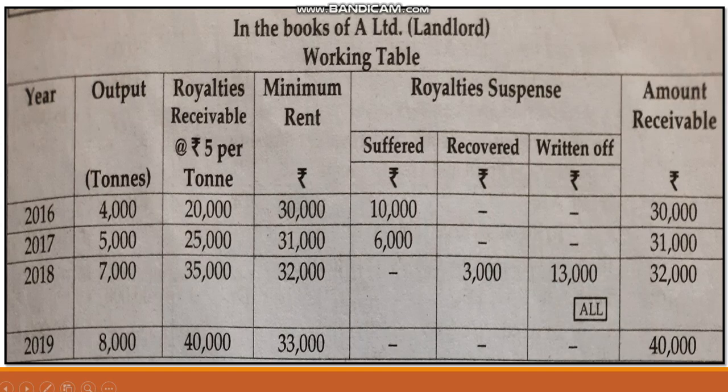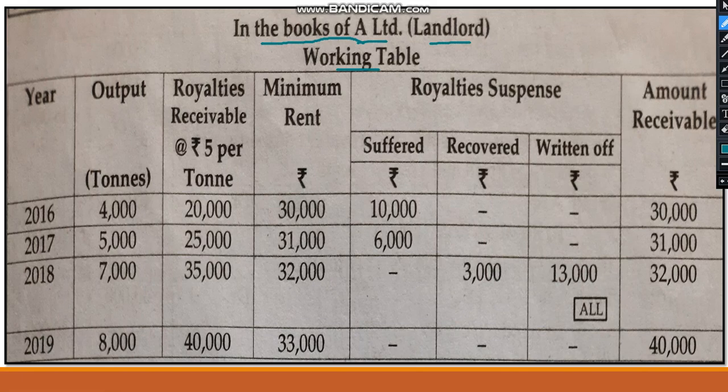Next, we will see one short example on royalty. Observe the working table carefully. On the basis of this working table, you can easily pass the entries in the books of the lessor. This example is for A Limited. A Limited is the landlord. First, in royalty account, you need to prepare the working table, and on the basis of that working table, you need to pass the journal entries.